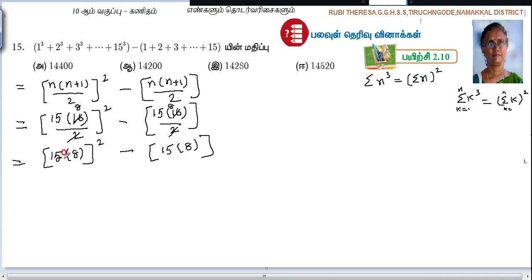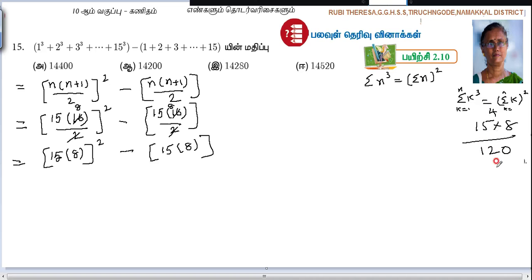Now let's compute: 15 square means 8. 1, 8, 8, 2, 10, 10 gives 120. Here: 5 is to 80, 8, 40, 120. So 15 into 16 divided by 2 equals 120.